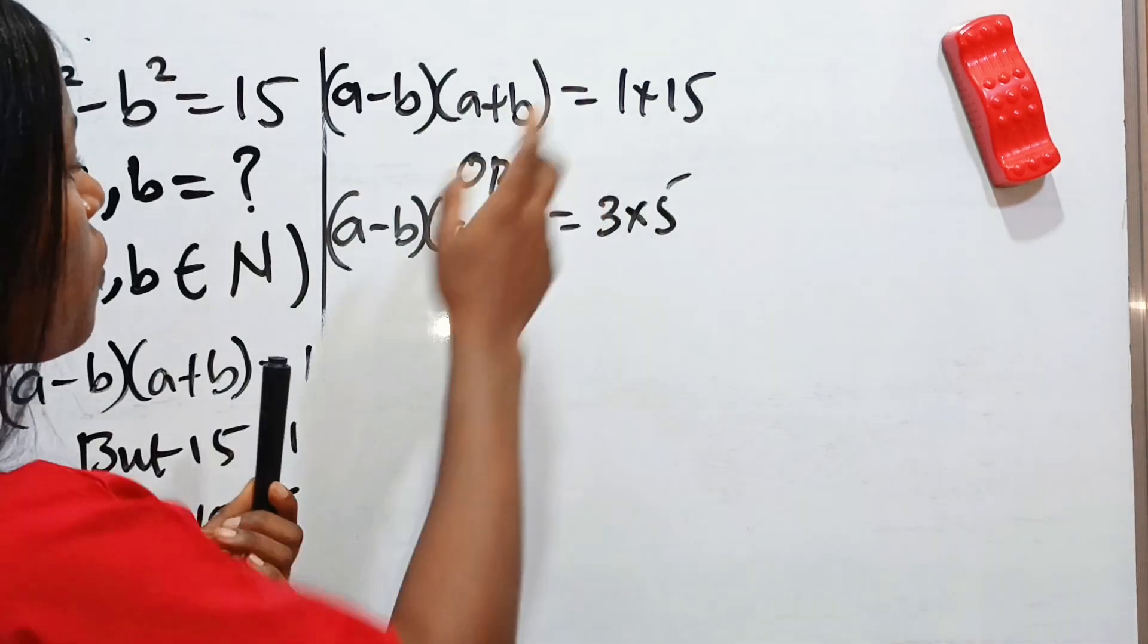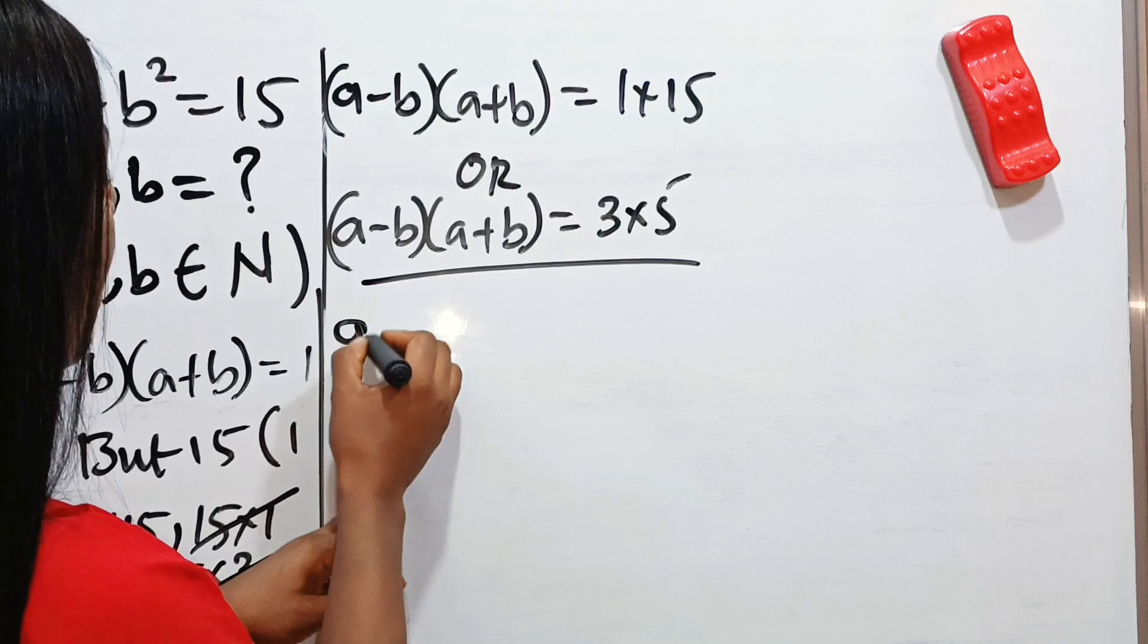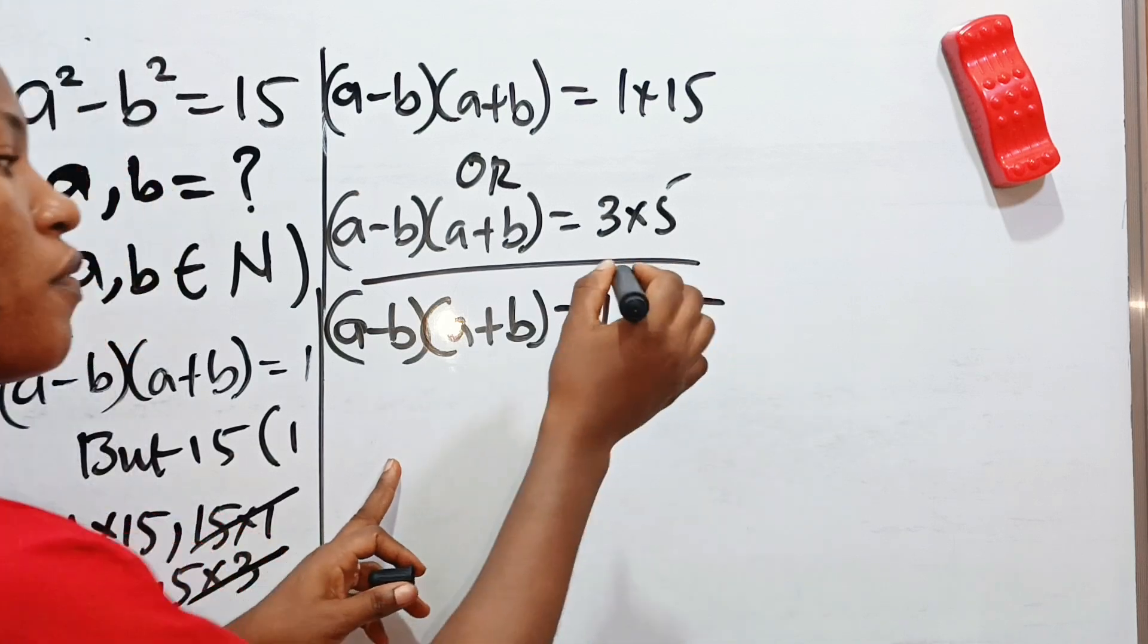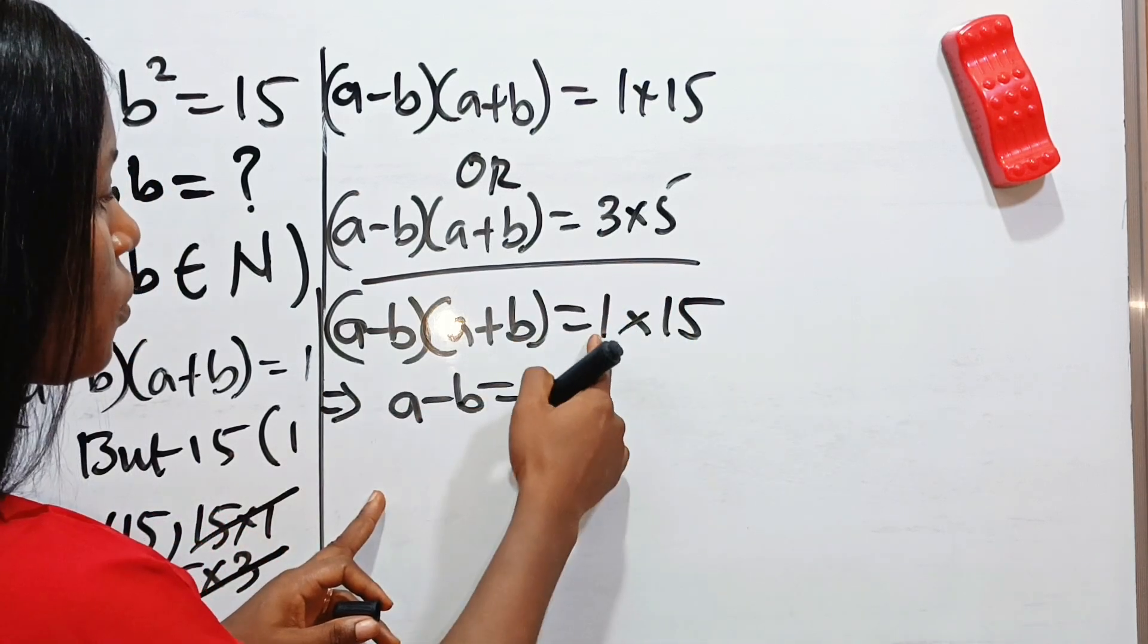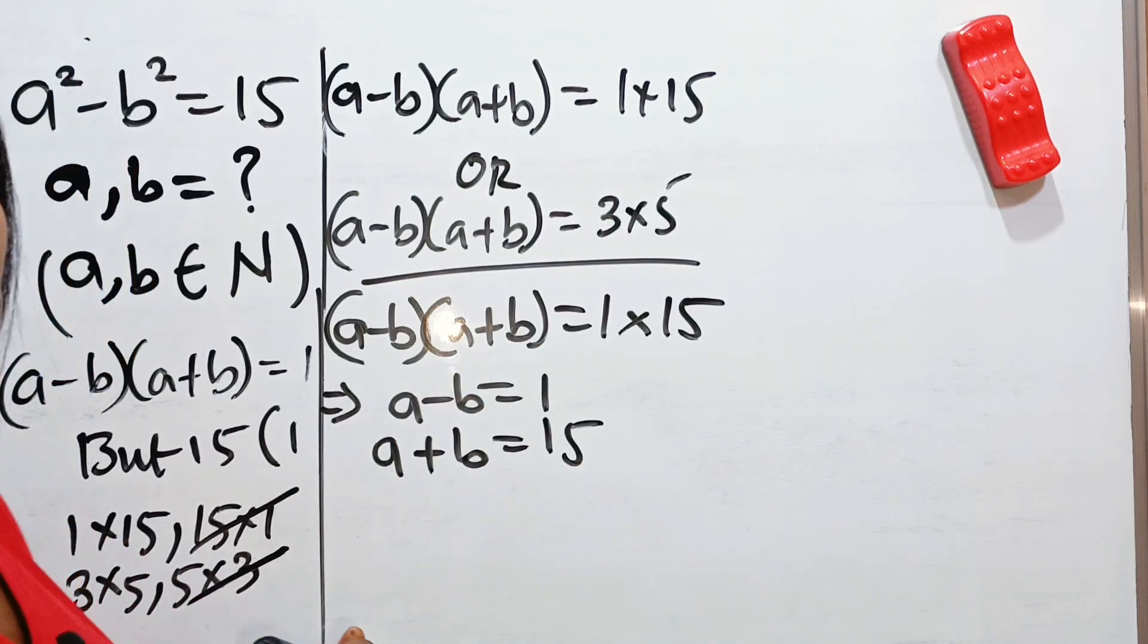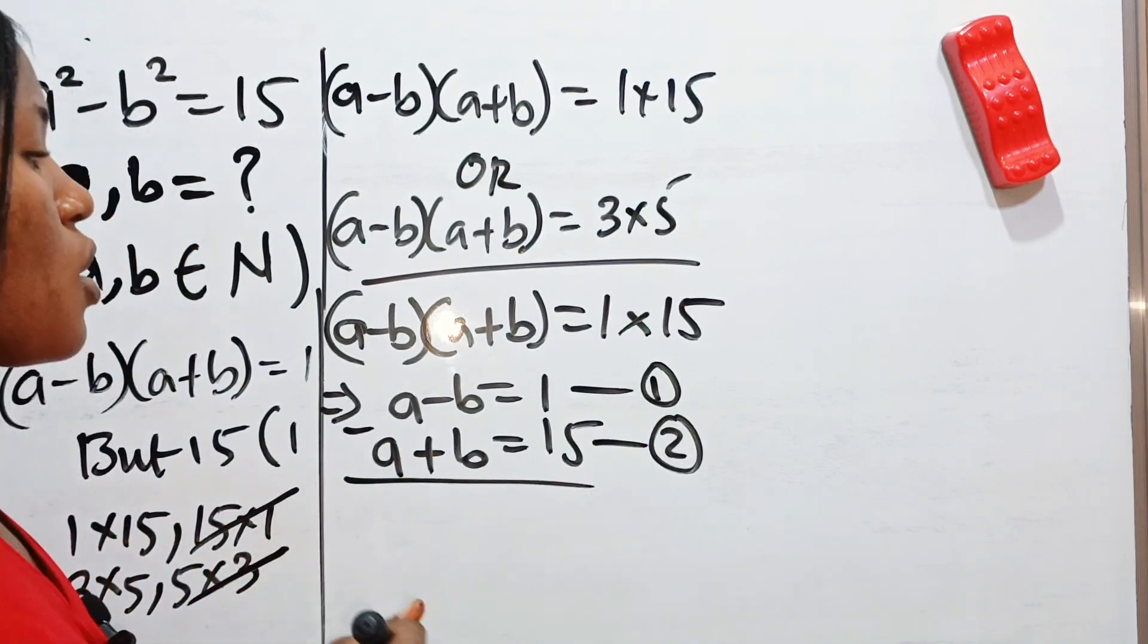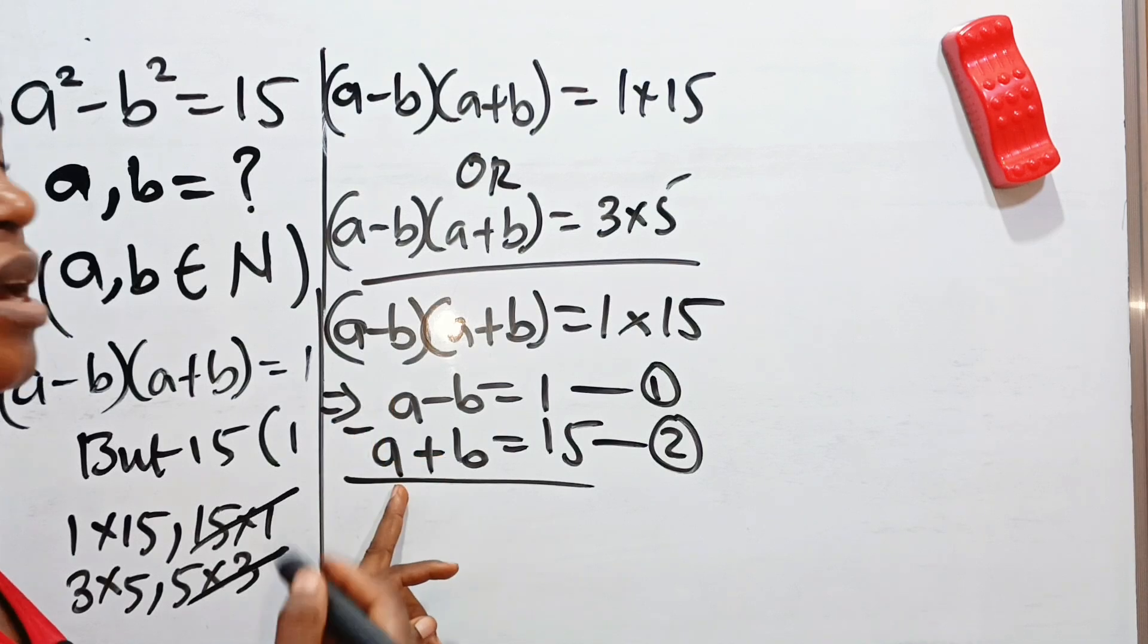Let us solve for the first one. For the first one, we have that a minus b multiplied by a plus b is equal to 1 multiplied by 15. So this implies that a minus b is equal to 1, and a plus b is equal to 15. If we call this equation 1 and this equation 2, and we subtract equation 1 minus equation 2, we are going to have a minus a is 0.